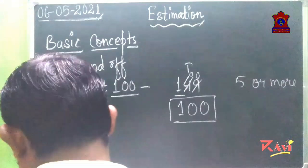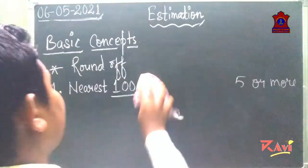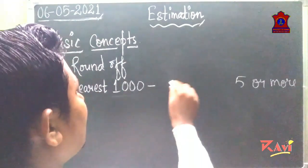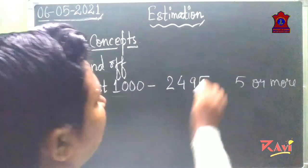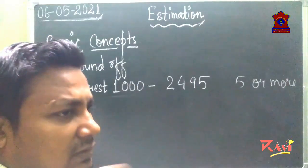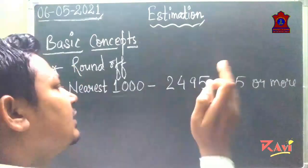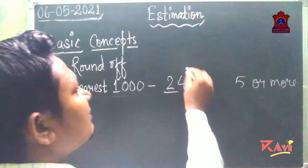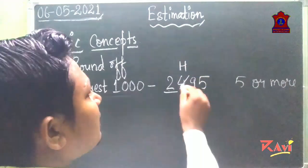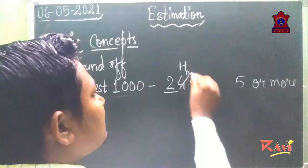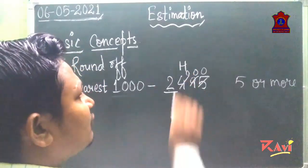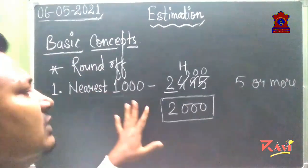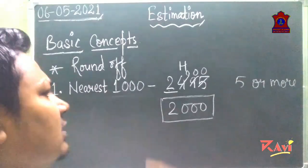Look at one more example: round off to the nearest thousand. The number given is 2495. We check the thousands place — there is 2. Before that, what is at the hundreds place? Four. Four is less than five, so all remaining digits become zero and nothing is added. The value is 2000. This process of rounding off goes on and on.